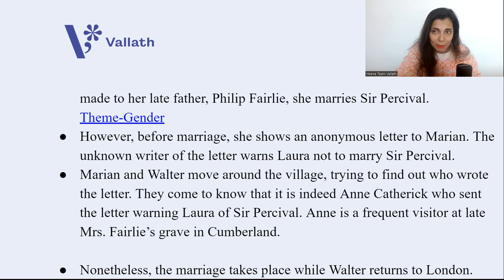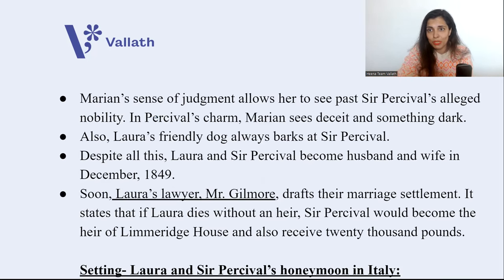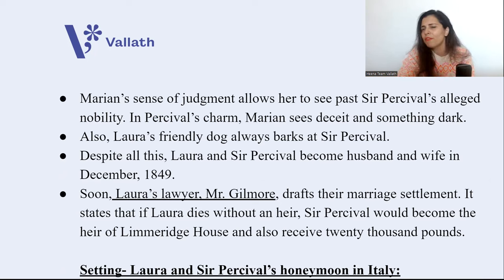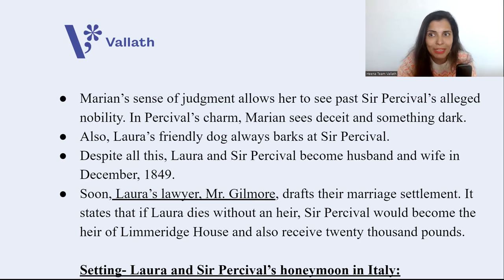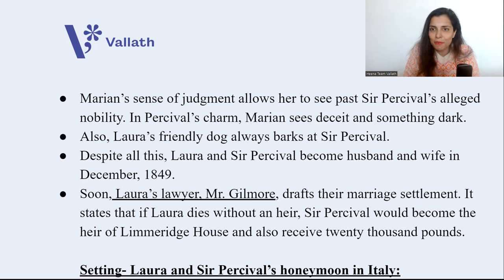Nonetheless, the marriage does take place. Walter, heartbroken, returns to London. Marianne's sense of judgment allows her to see through Sir Percival's alleged nobility — he is very charming and noble on the face, but Marianne feels he is deceitful and hiding a dark secret. Also, Laura's friendly dog always barks at Sir Percival. Despite all this, Laura and Sir Percival become husband and wife in December 1849.